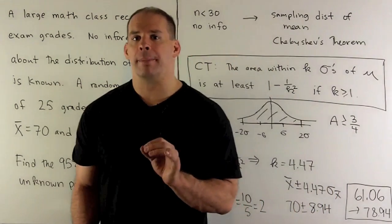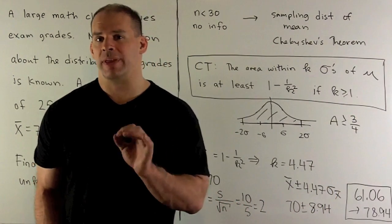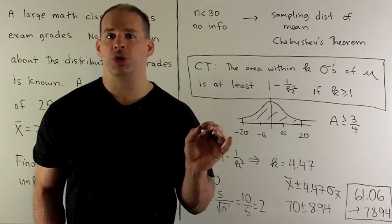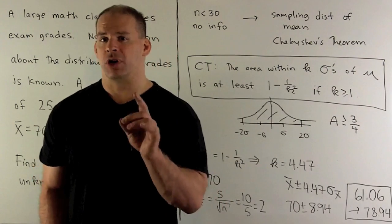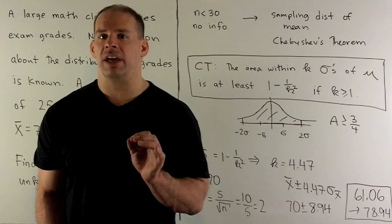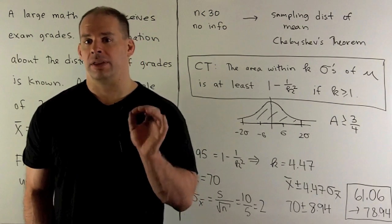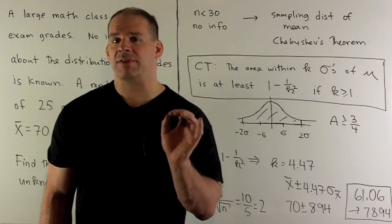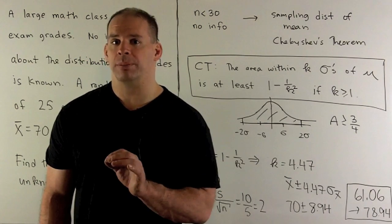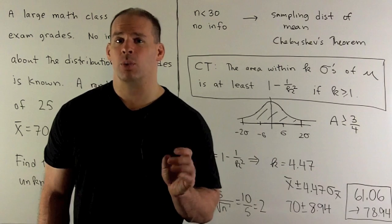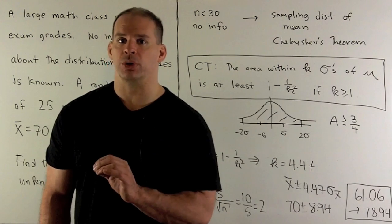We worked this problem out in the previous video where we were assuming that our population distribution was normal. We had two cases: in the first case we didn't know the standard deviation, and in the second case we did know it. In the first case, the sampling distribution of the mean was a t-distribution, and in the second case where we did know the standard deviation, we had a normal distribution.